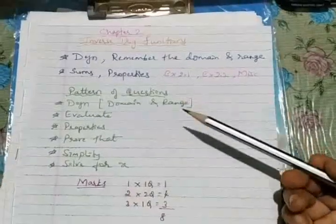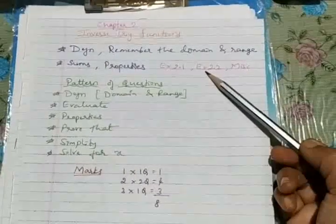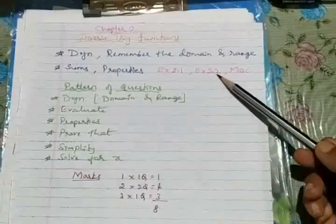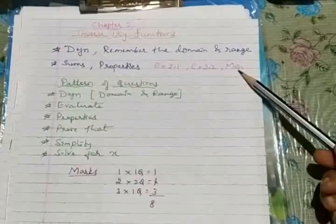Coming for the exercise point of view in your text, you find two exercises only. That is exercise 2.1 and 2.2 plus the miscellaneous. If we will solve this question also, it's well and good.